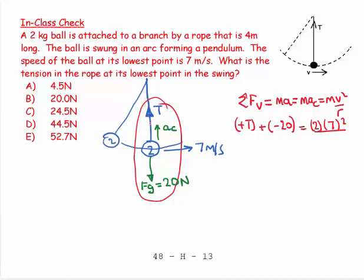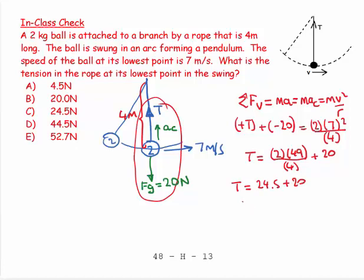Do I have a radius? 4 meters. Didn't put it on my diagram. Shame on me. 4 meters divided by 4. So T is equal to 2 times 49, 7 sevens divided by 4 plus 20. So T is going to equal a half of 49, which is 24.5 plus 20. So T is going to equal 44.5 newtons. And there we have the answer.